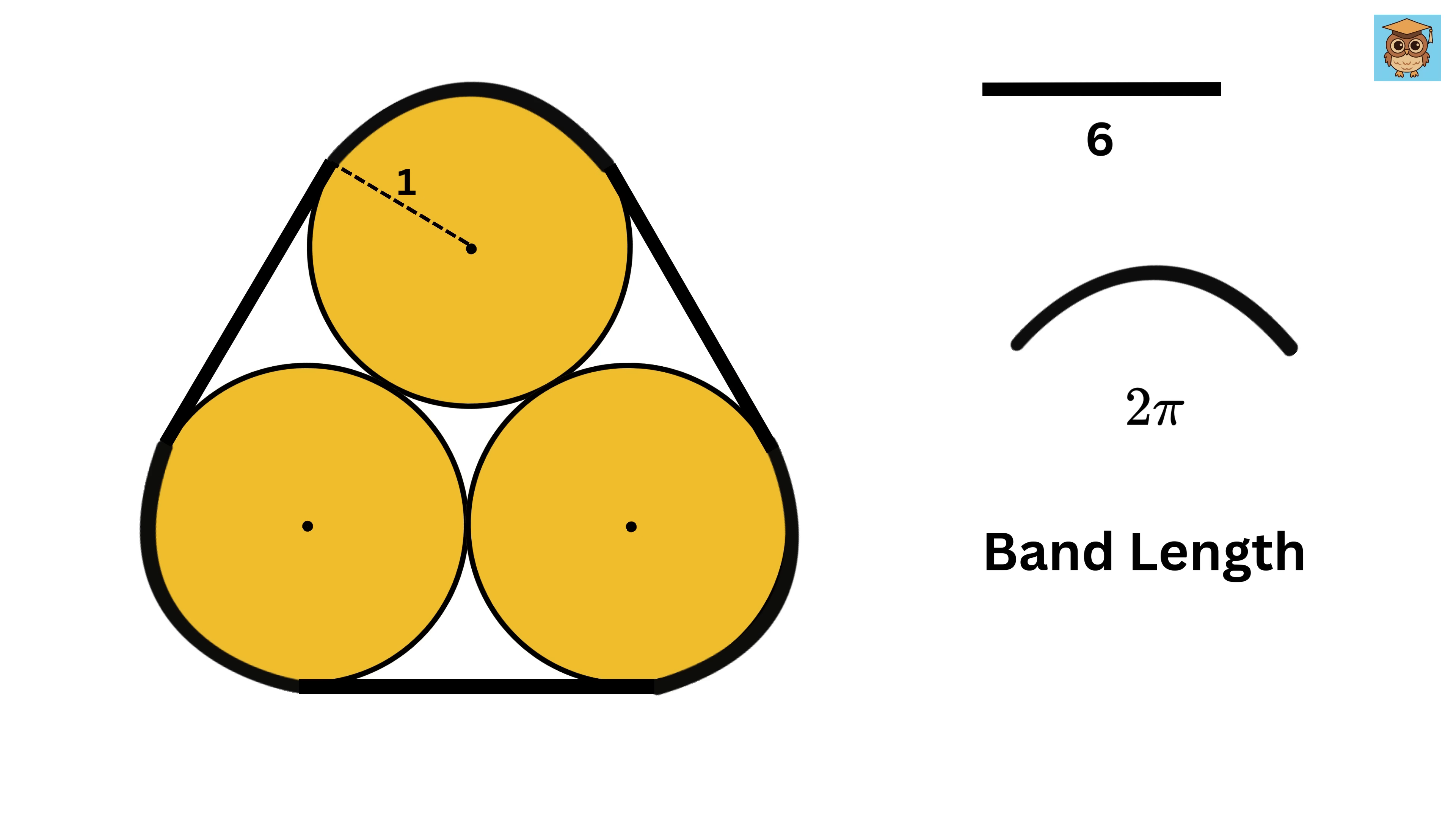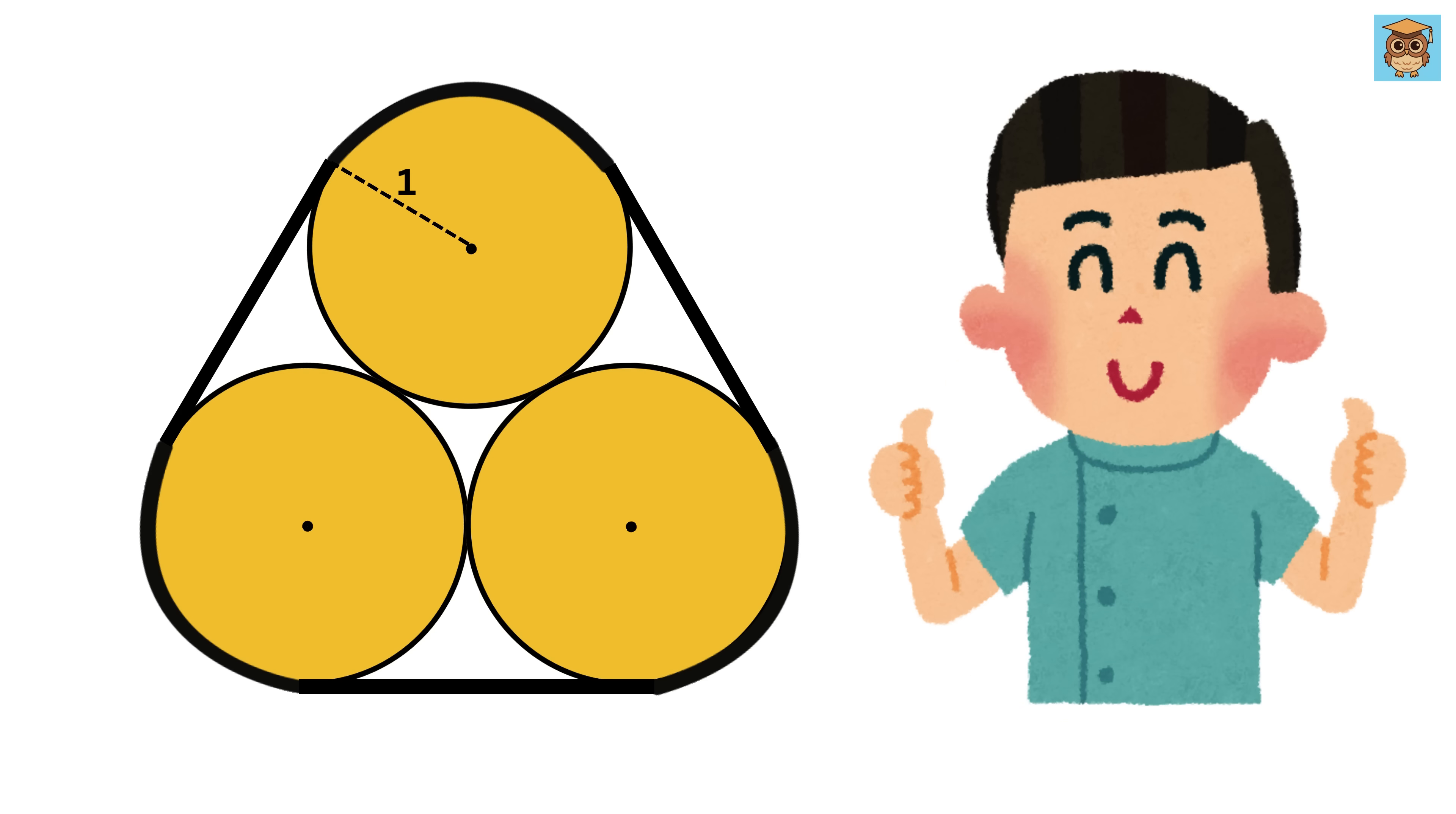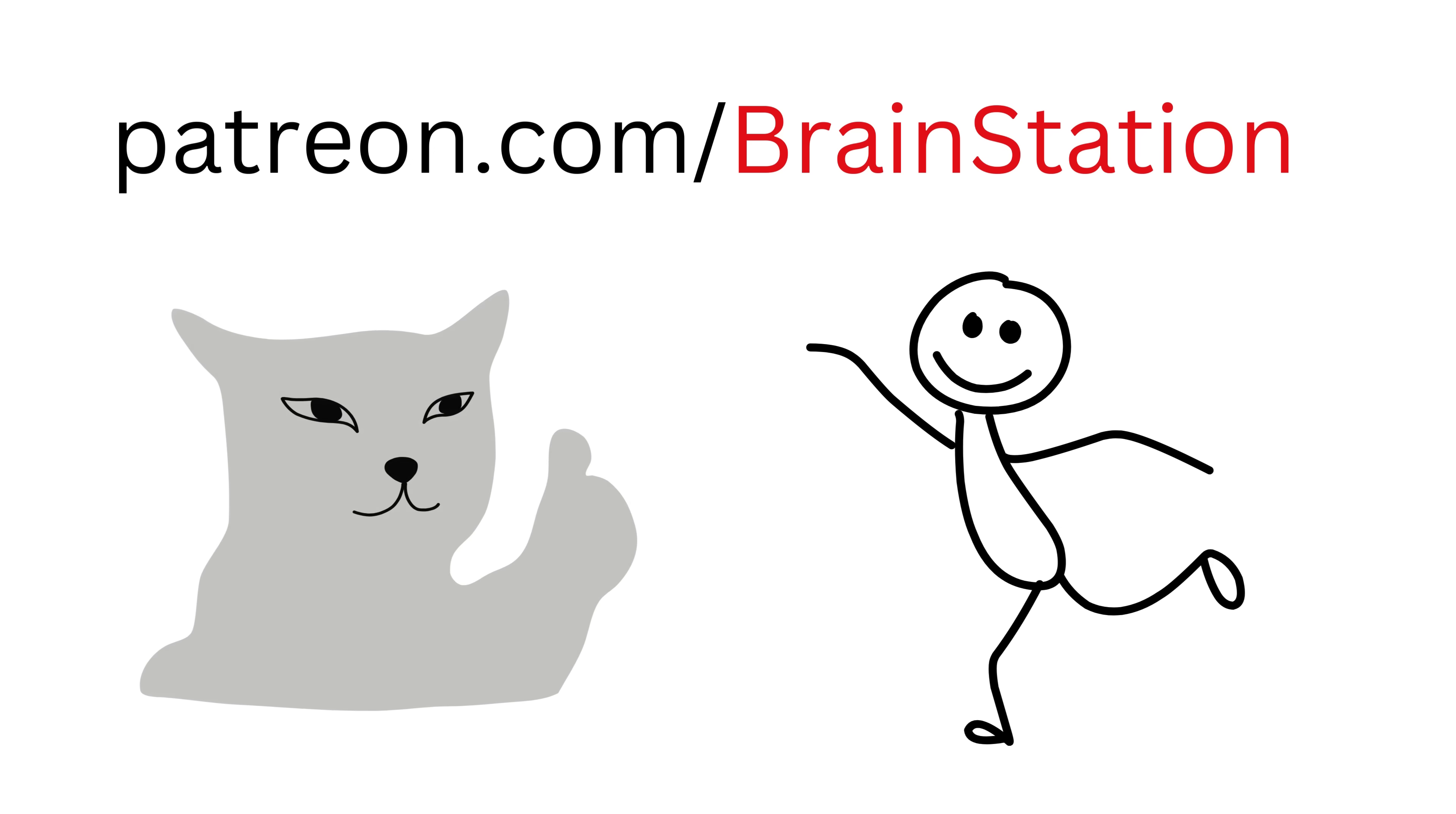Therefore, the total length of the band becomes 6 plus 2π units, which is roughly 12.28 units. And that's it! That was super cool. If you enjoyed this video, please don't forget to like, share, and subscribe to our channel.